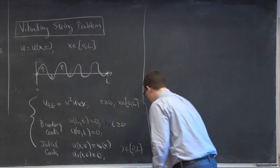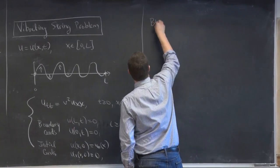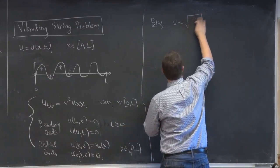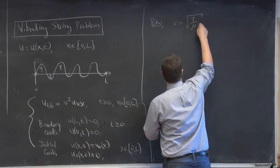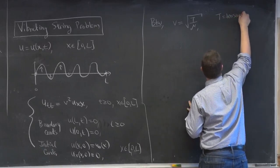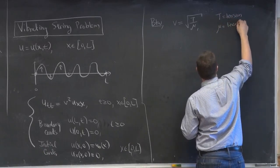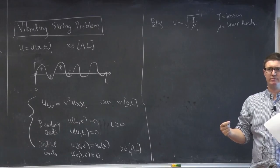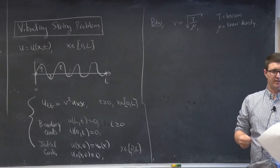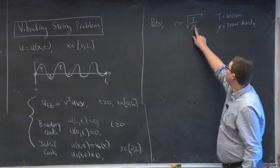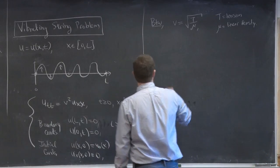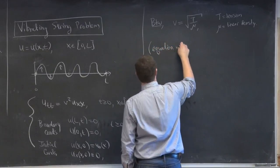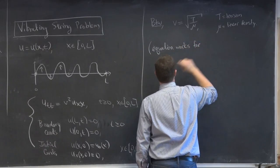For those interested in the physics: the velocity is given by the tension T divided by the linear density mu, where mu is the mass divided by the length. So you'll have a certain mass of a guitar string, divide by the length, and that gives you mu. This holds for small slopes, because it uses some approximations to derive it. On a guitar, the displacement is small compared to the overall length of the string.